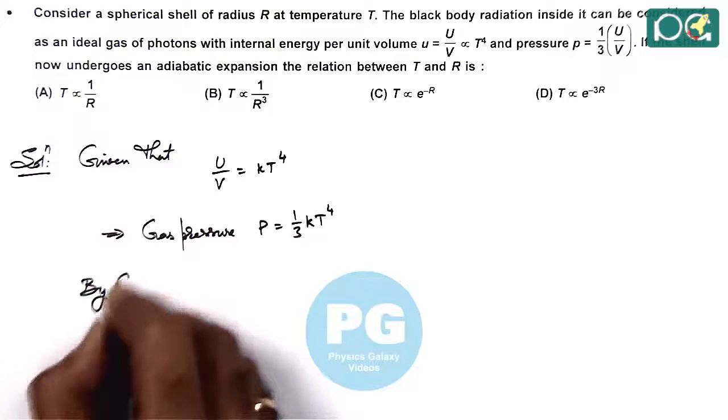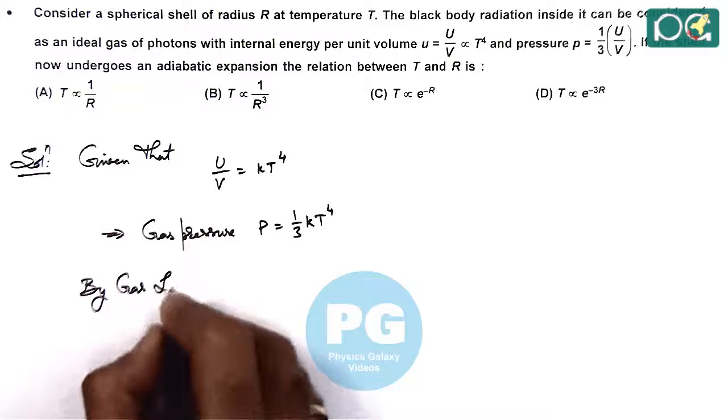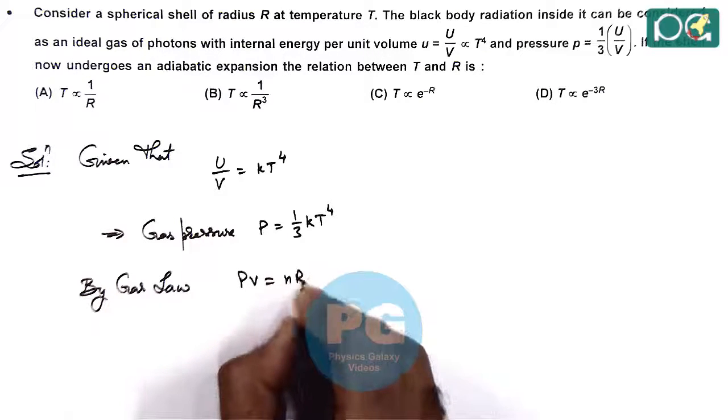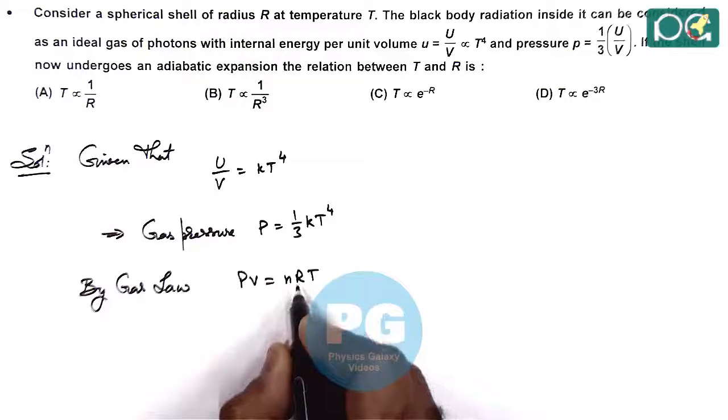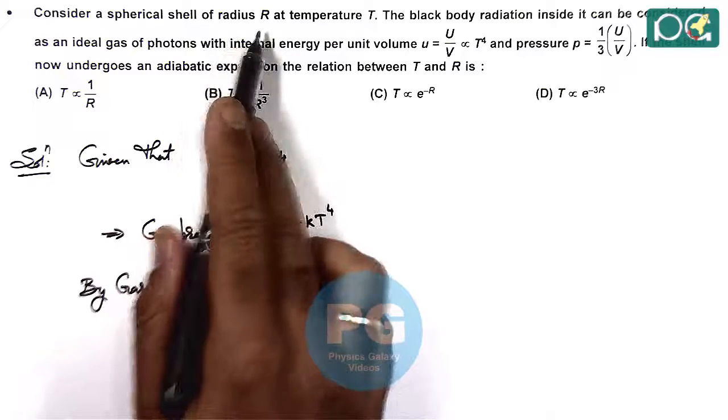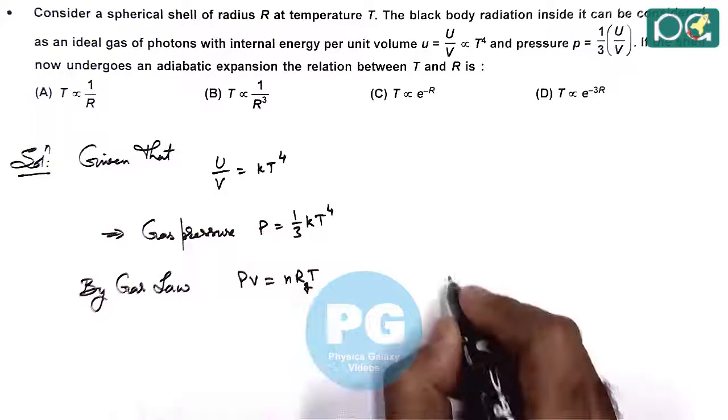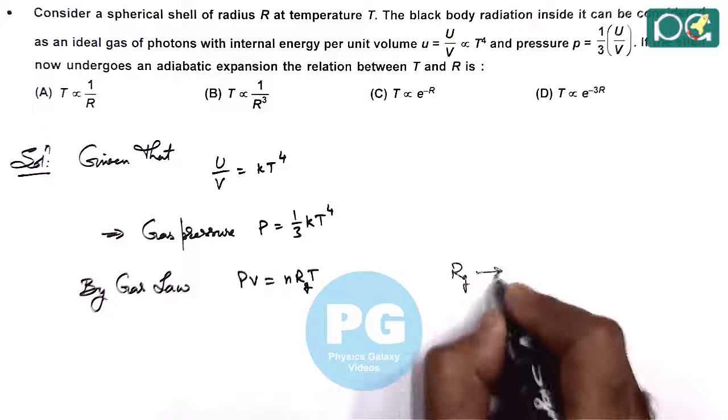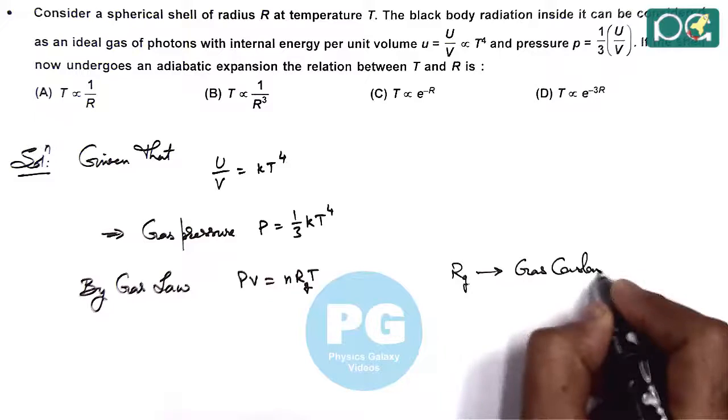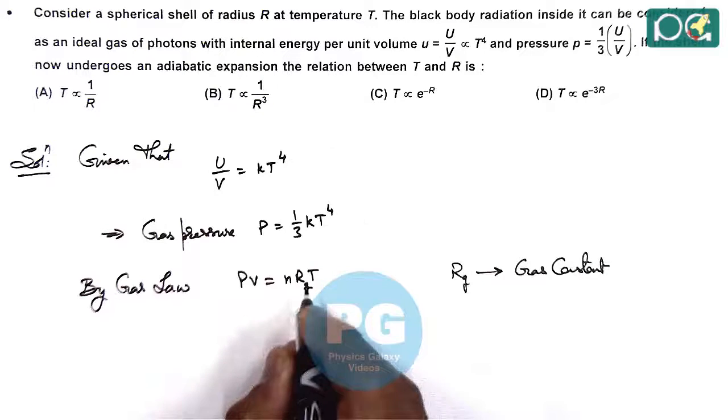By gas law, PV equals N RT. Here R is the gas constant. But in the question, R is given as the radius of the spherical shell. So I write it as RG. Here RG is taken to be the gas constant, so that the symbols will remain different and we should not get confused.